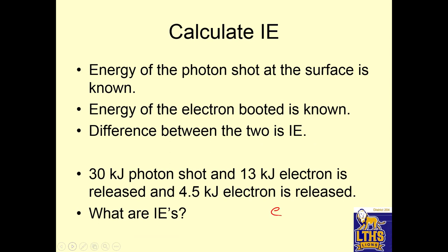Calculate the ionization energy. The energy of the photon shot at the surface is known. Energy of the electron booted is known. The difference between the two is the ionization energy. So if I have a 30 kilojoule photon shot, and a 13 kilojoule electron is released, and a 4.5 kilojoule electron is released, what is the ionization energy? So I'm shooting a 30 minus 13, which is 17 kilojoules for atom number one. And for atom number two, I had a 30 kilojoule photon minus 4.5, which is 25.5 kilojoules. There you go. That's pretty simple.